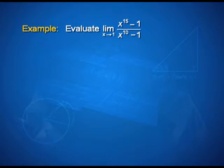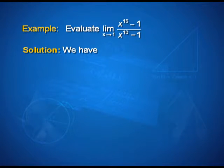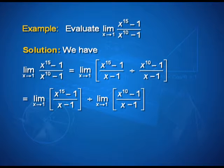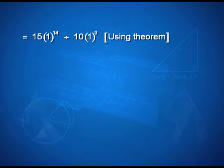Now let us solve an example using this theorem. Evaluate limit of (x to the power 15 minus 1) upon (x to the power 10 minus 1) as x tends to 1. This can be written as limit of (x¹⁵ minus 1) upon (x minus 1), divided by limit of (x¹⁰ minus 1) upon (x minus 1), as x tends to 1. Using the theorem, we have 15 into 1 raised to 14, divided by 10 into 1 raised to 9, that is equal to 15 upon 10, which equals 3 upon 2.